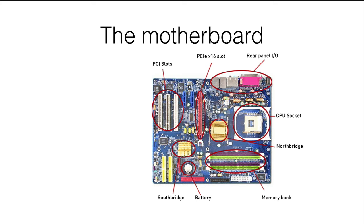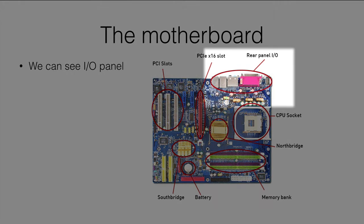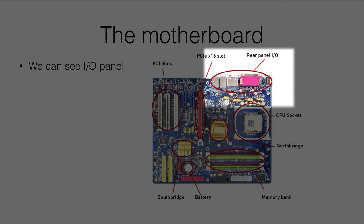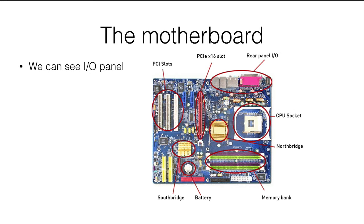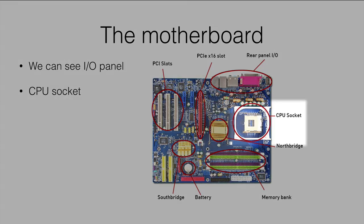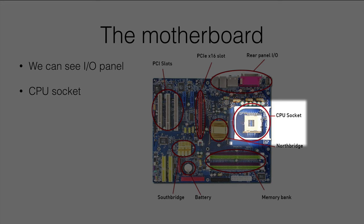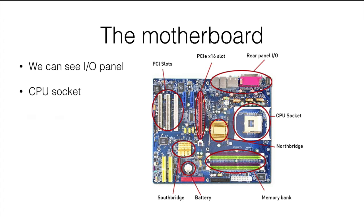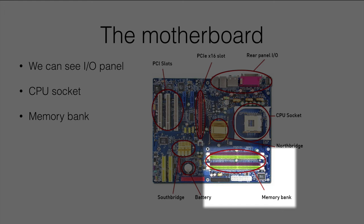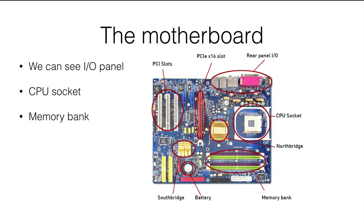So the motherboard is what you see on the right. It looks quite scary, but trust me, it's not that bad. The main things have been marked so you can see them more easily. We can see the I/O panel at the top left — that's what you see behind your computer when you're trying to plug something in, the rear panel input-output. Then you have the CPU socket right below it, where your central processing unit is plugged in. And then at the very bottom you have the memory bank, which is where your RAM goes — that temporary storage we talked about.